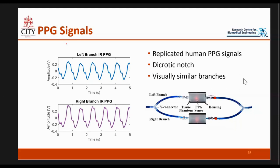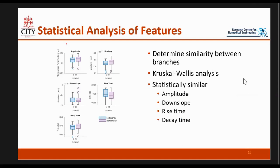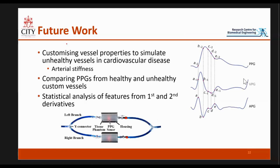To further confirm this, we did feature extraction. We started with simple, well-known features — looking at the amplitude, the gradients of the upslope and downslope, and the time taken for the peak to rise and fall. We then did a statistical analysis to quantify these signals, and most of them were the same. The upslope showed some variation between branches. The idea was to have two normal healthy branches, and this was shared in the paper, which focused on how we built the system and its potential for cardiovascular disease investigation. Future work will involve customizing the vessel, introducing a disease, and analyzing more PPG features including the first and second derivatives, which in the literature hold a lot of potential information.